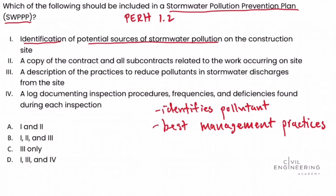We already addressed option one — it's the identification of potential sources of stormwater pollution on the construction site. We can't know what we're going to be controlling if we don't know what we're controlling, so we first need to identify those. Option one is a valid choice.